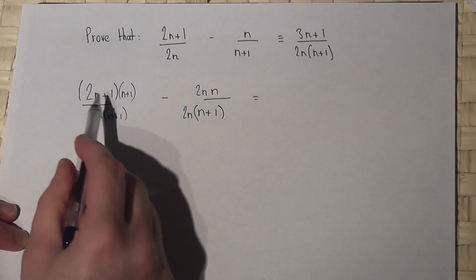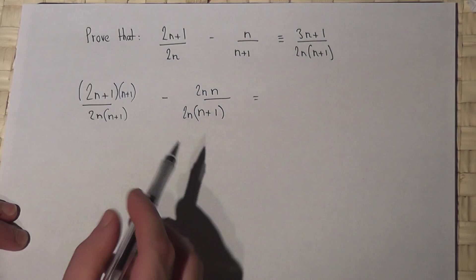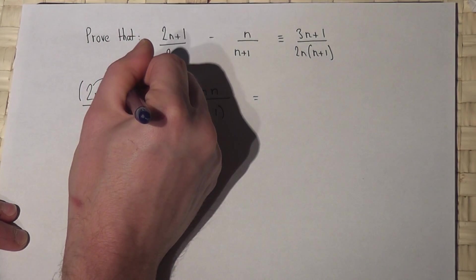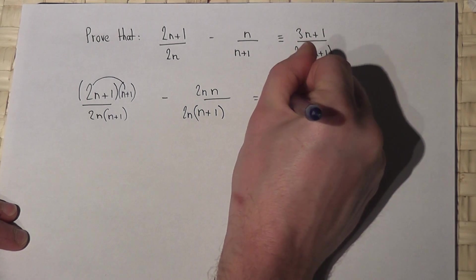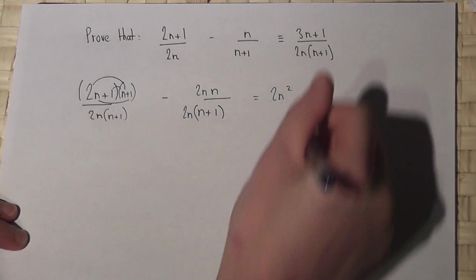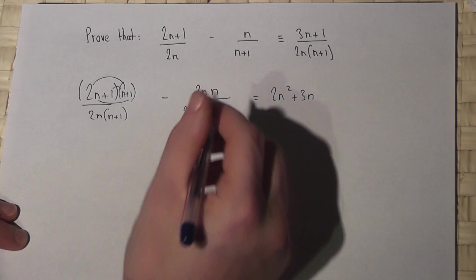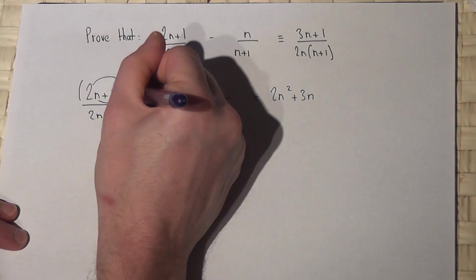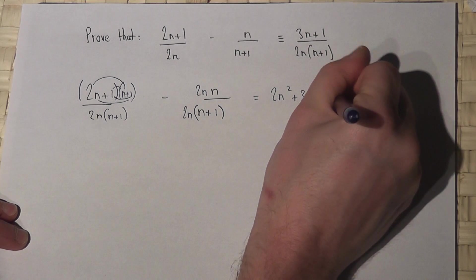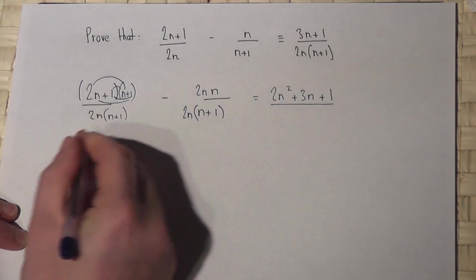Now I need to calculate what the top of each fraction is. The top fraction is double brackets, so I've got 2n², then 1n plus 2n which is 3n, and then 1 times 1 which is 1. So that's (2n² + 3n + 1) all over 2n(n+1).